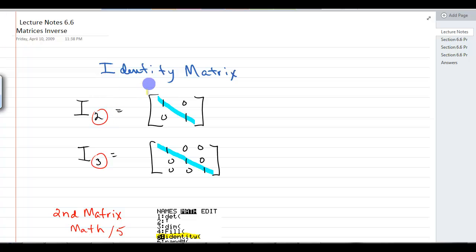Identity matrix is denoted by a capital I, and then the sub number here tells you the size of the matrix, either it's 2 by 2, 3 by 3, etc. And you have a 1 and 0s, and then the next row has 0s and the 1 moves over. You're going to have a diagonal of 1s.